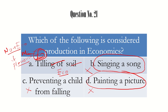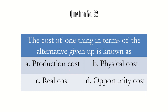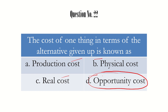Question number 22: the cost of one thing in terms of the alternate given up is known as — production cost, physical cost, real cost, or opportunity cost? If we remember the definition of opportunity cost, it is the cost incurred by foregoing the second-best alternative. The question says 'alternate given up,' and 'given up' and 'foregoing' mean the same. So the answer is option D: opportunity cost.